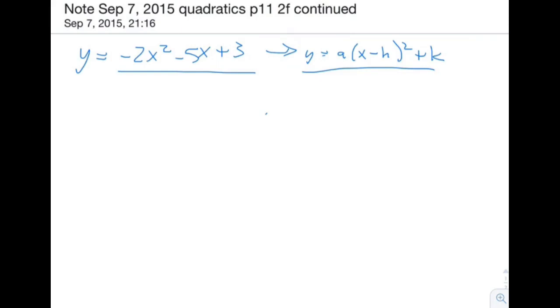So first step to completing the square is you look at the x² term and the x term, and you want to factor out the A term, which happens to be negative 2 in this case. So we're going to factor out negative 2, and that's just going to leave 5 halves. Just to confirm that works, let's multiply negative 2 times 5 halves. We'll get negative 5, which is what's here. So that was correct factoring.